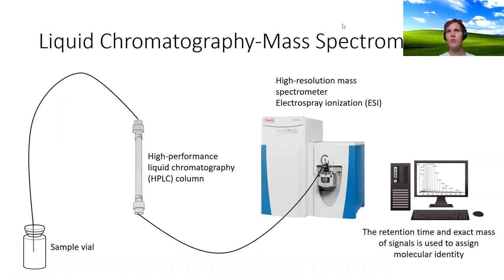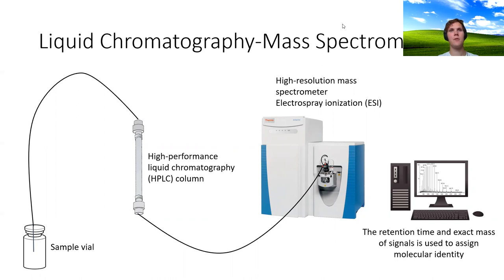A brief overview of liquid chromatography mass spectrometry — we don't expect you to understand all the details, but we do expect you to gain enough understanding to interpret the data. You begin with a metabolite extract in a sample vial, and a small volume — anywhere from a fraction of a microliter to 5 or 10 microliters — is injected onto an HPLC column. The column has solvent running over it, and as the gradient progresses, it goes from aqueous to organic solvent (or vice versa) depending on the chromatography type. Gradually, metabolites come off the column and are detected by the mass spectrometer as peaks.